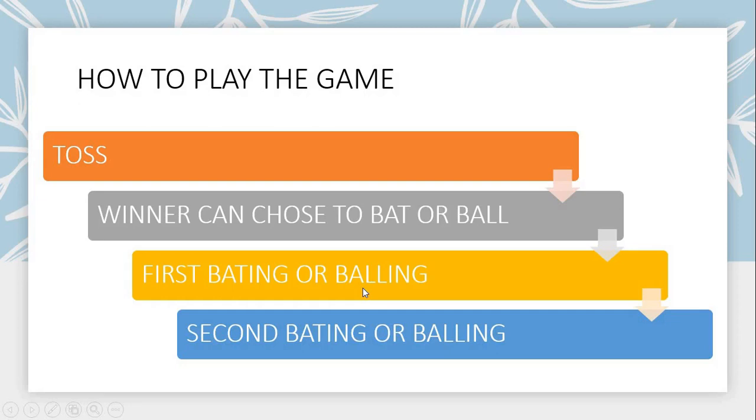We check whether the sum is odd or even. Whoever's choice matches the result wins the toss and can choose to bat or ball. It's the winner's choice basically—the winner will choose whether to bat or ball.